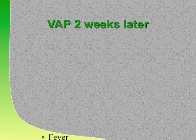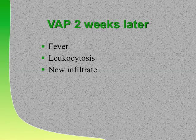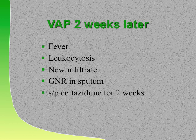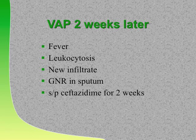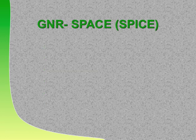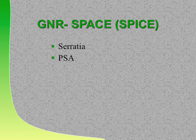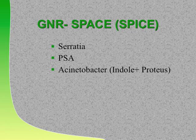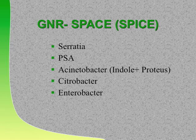A patient has had ventilator-associated pneumonia for two weeks with fever, leukocytosis, a new infiltrate, and gram-negative rods in the sputum after two weeks on ceftazidime. What is the most likely gram-negative rod that will grow through ceftazidime? The SPICE or SPACE bugs. S = Serratia, P = Pseudomonas aeruginosa, A = Acinetobacter, I = indole-positive Proteus, C = Citrobacter, E = Enterobacter. These are inducible beta-lactamase producers. Your second-line drug will be a carbapenem.